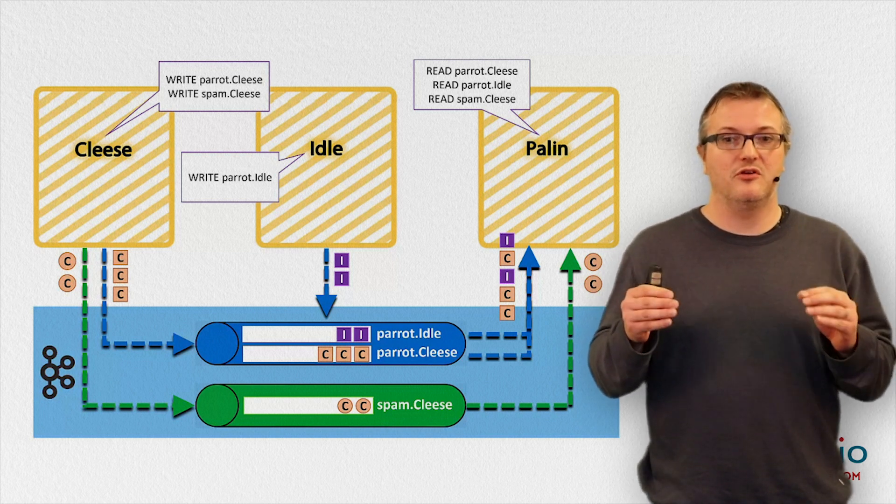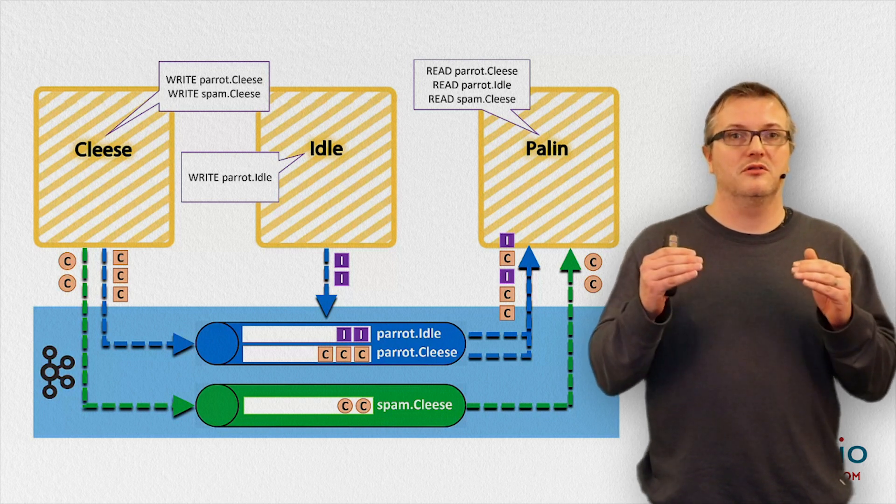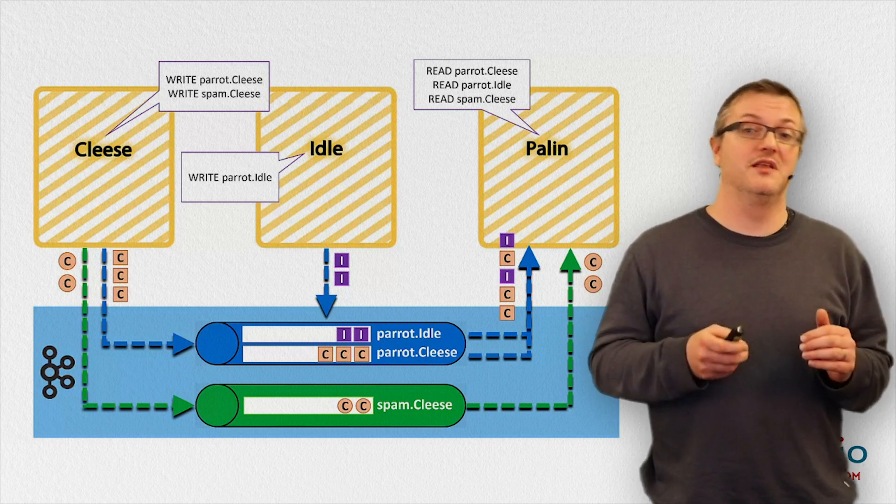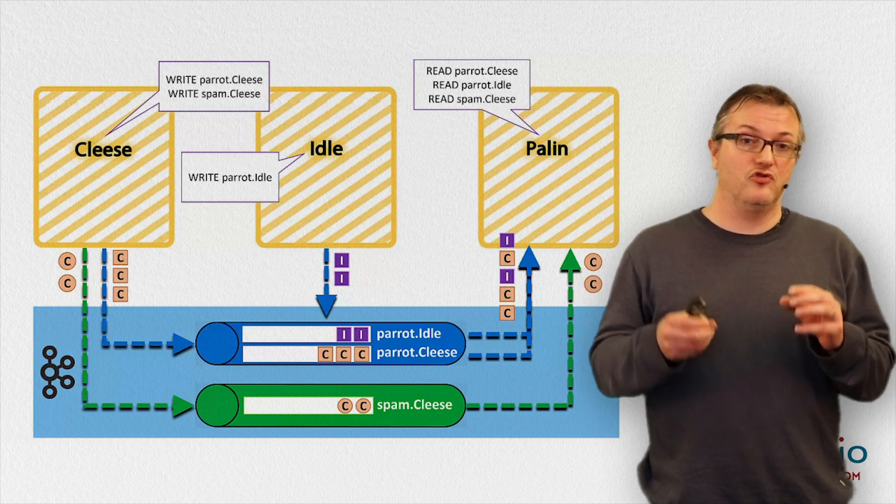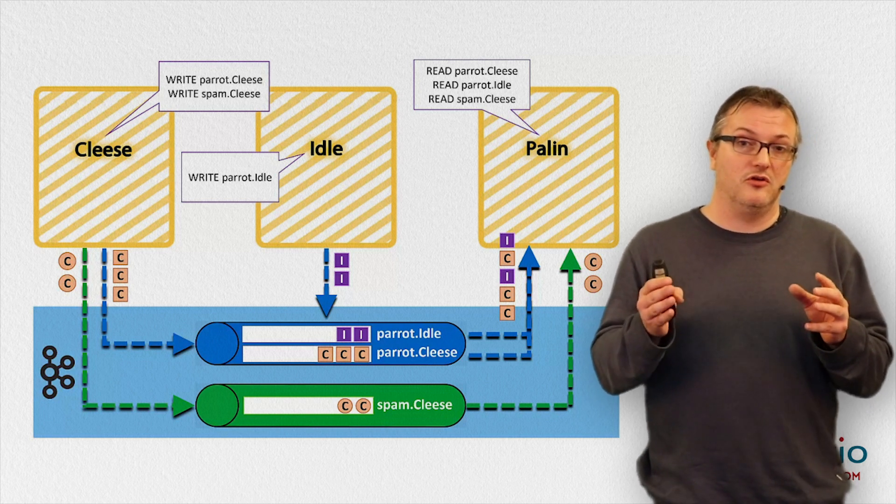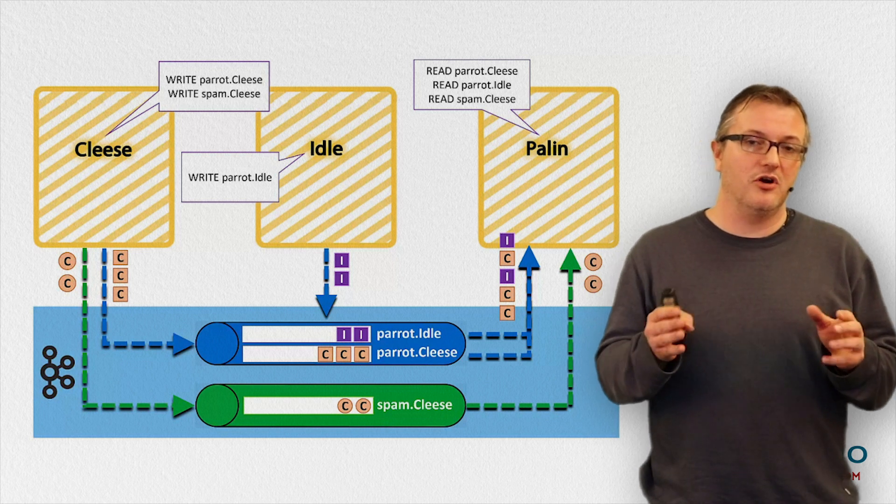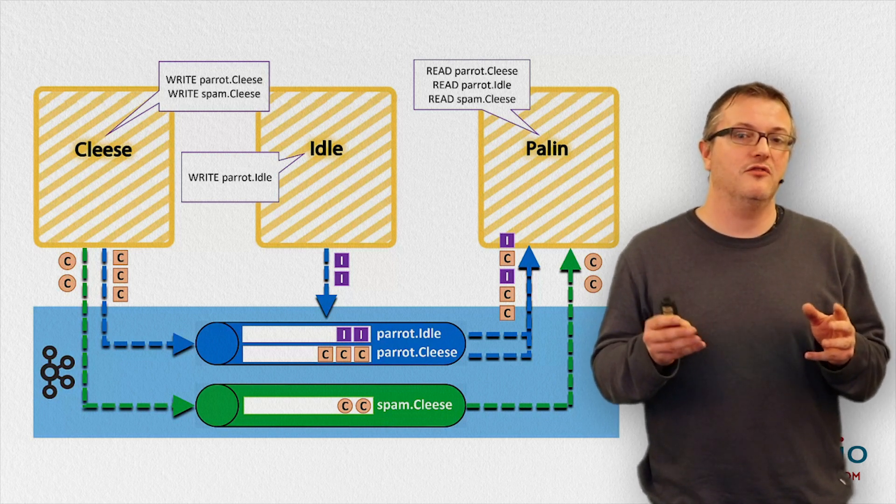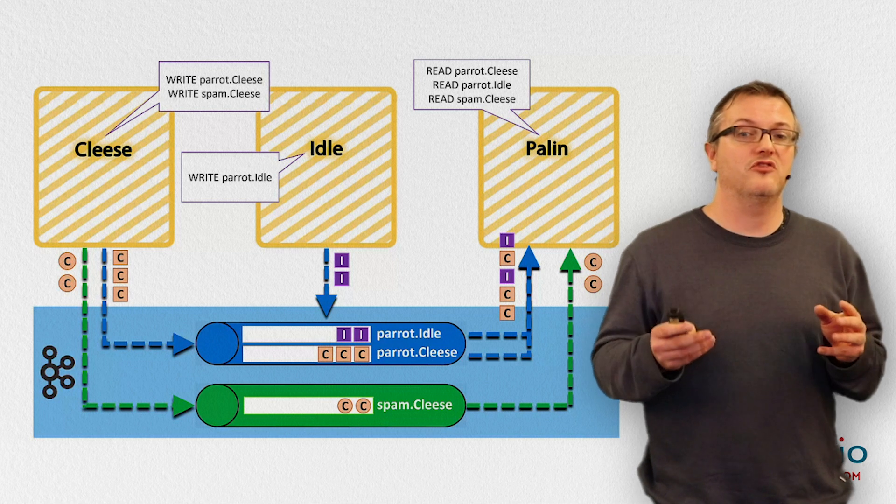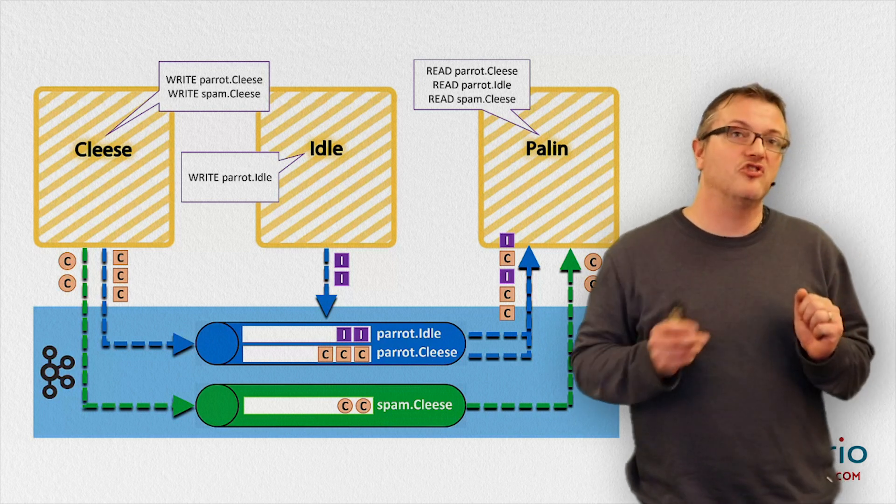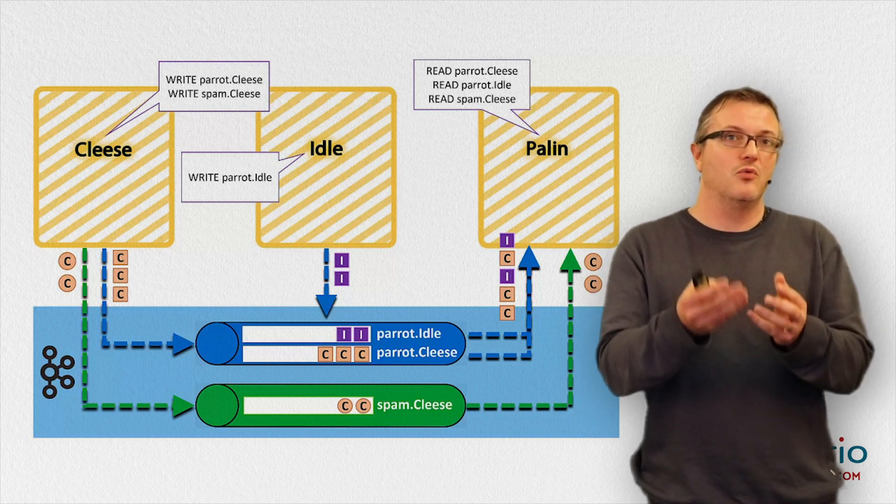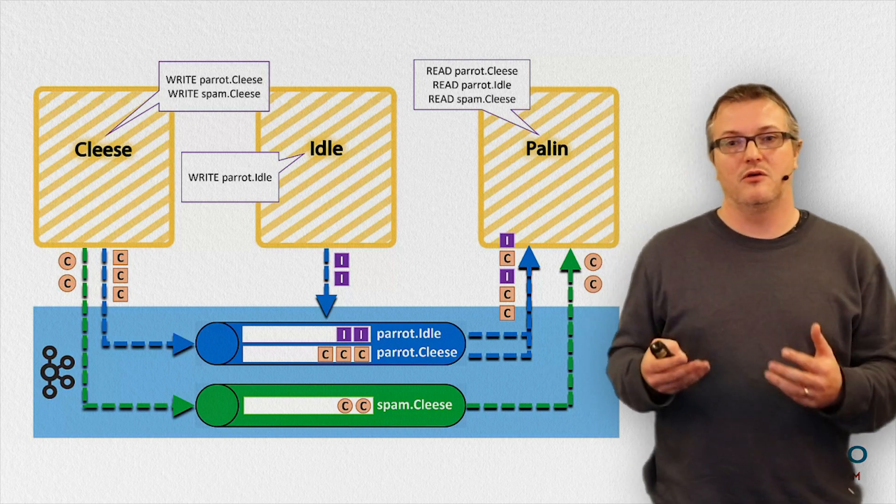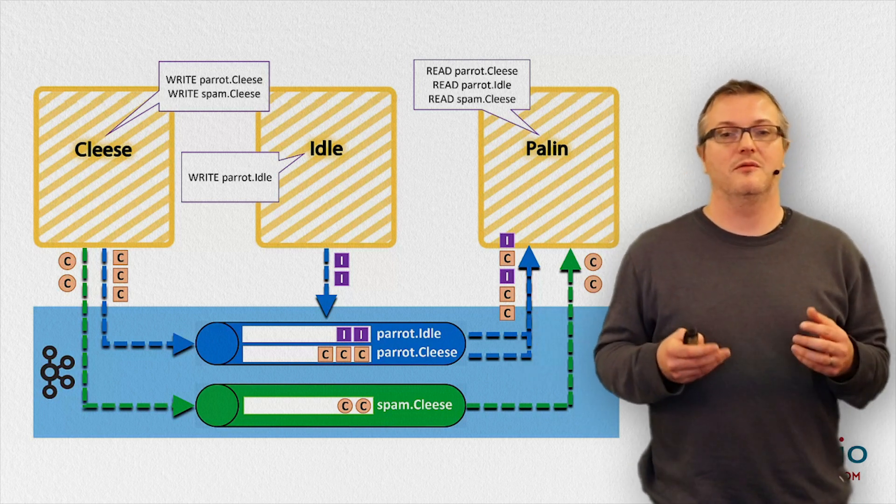More in particular, there is one Kafka topic per tenant that has write access to that data stream. This allows us to easily maintain and guard the provenance of the data itself, in the sense that anybody who consumes those data streams can easily check what the origin of a data point is by just looking at which concrete Kafka topic brought me this particular piece of data.